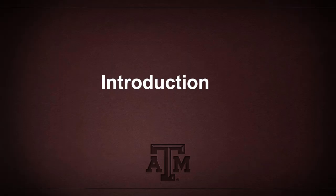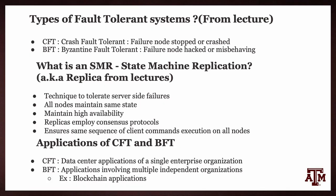Coming to the introduction, there are two types of failures in a distributed system. One is the crash failure, which occurs when the servers are stopped or crashed. The second one is Byzantine failures, which can occur if the servers are malicious, if hackers are trying to hack the servers, or the servers are behaving arbitrarily.